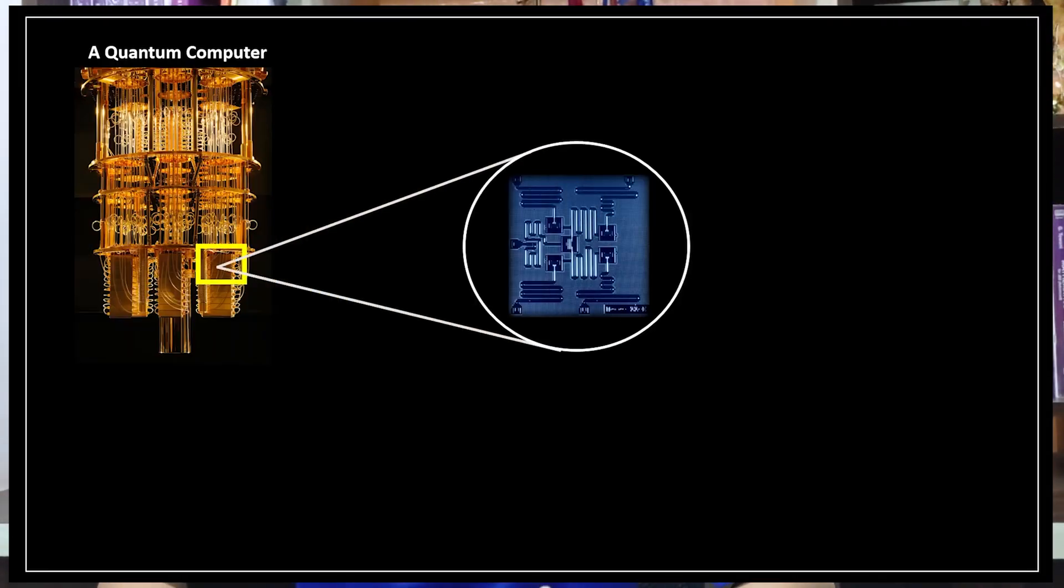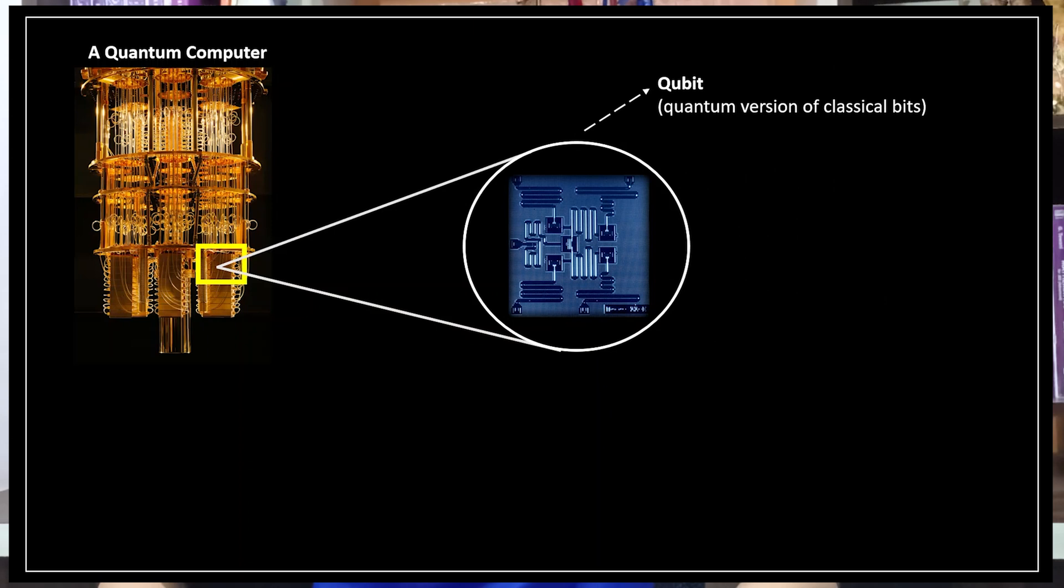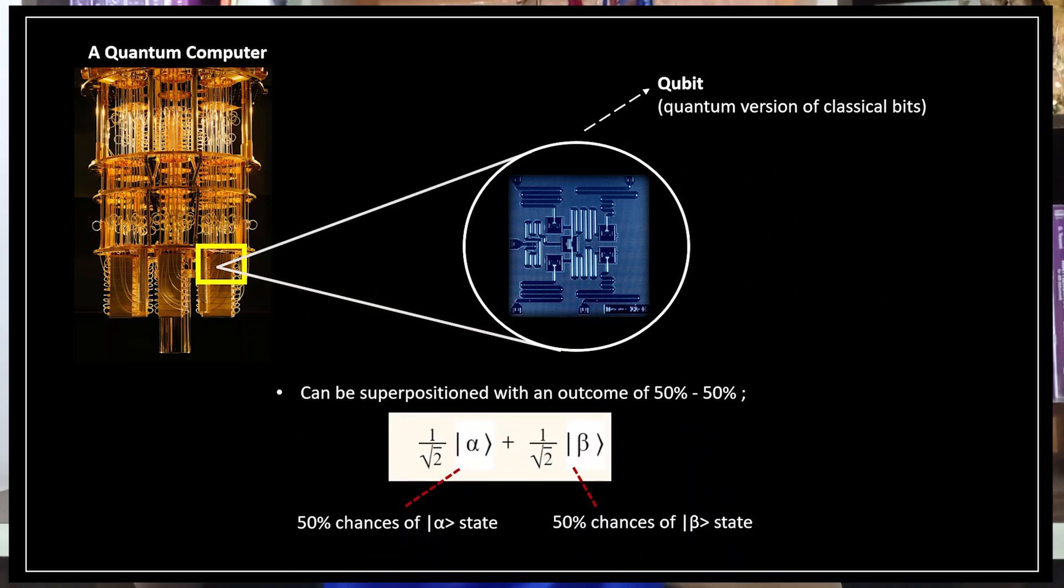Here's a fun fact. In quantum computing, which is using applications of quantum mechanics through complex computer systems, at least that's how I define it, the qubits can be superpositioned on purpose experimentally. Qubits are basically the basic units of quantum information.